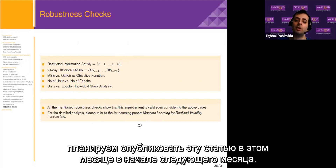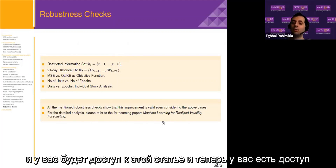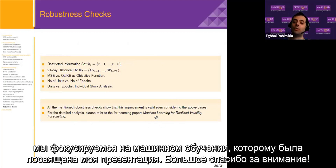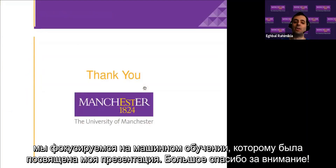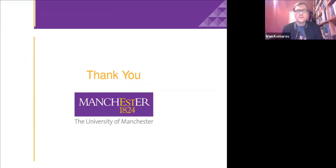We are going to publish this paper later this month or at the beginning of next month. The title is 'Machine Learning for Realized Volatility Forecasting.' You will have access to this paper, and for now you have access to our first paper if you are interested. Thank you so much. Thank you very much for your presentation and now we will move to the discussion phase.